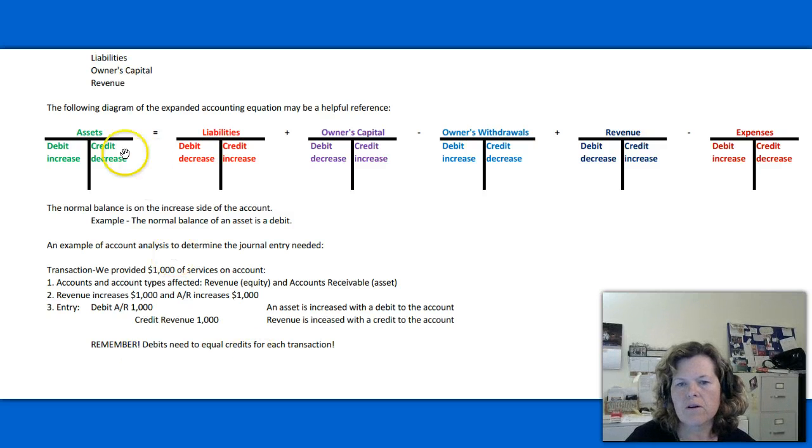Remember, debits need to equal credits for each transaction. That's the same thing as keeping our accounting equation in balance. It means exactly the same thing. It's just the way we use that in our formal accounting system. So you always want your debits to equal your credits. You can have more than two line items listed, but your debits always have to equal the total of your credits. Hope this has been helpful, and we'll talk about future topics in subsequent screencasts.